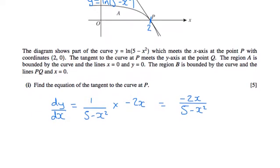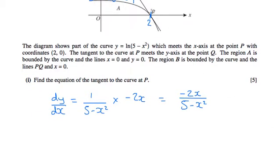We can then find the actual gradient at this point by subbing in x equals 2. So when x equals 2, dy by dx is going to equal negative 4 over 5 minus 4. So that is just negative 4.